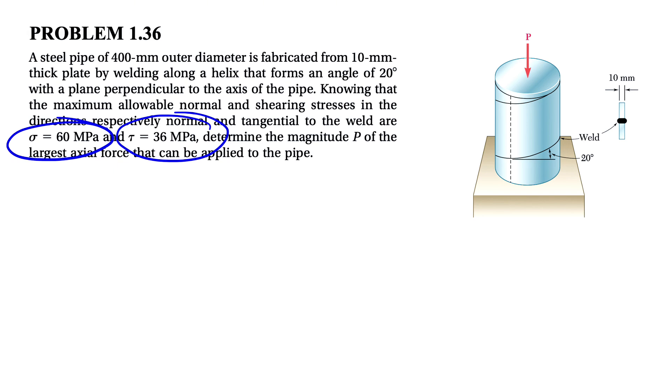We solved the previous question in the channel. I'm going to put the video at the end of this video. So basically for finding the normal stress and shearing stress, we found two formulas, which was P cosine squared of the angle that we have 20 degrees over the area, and the area that we are talking about is the area of the pipe.